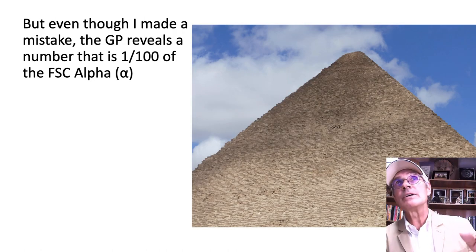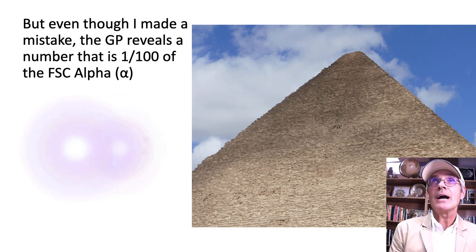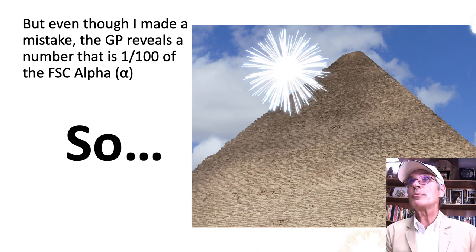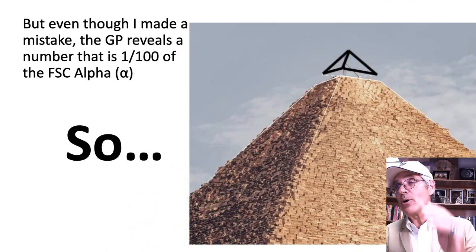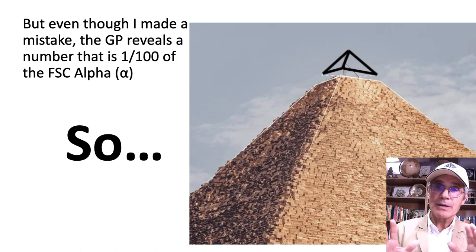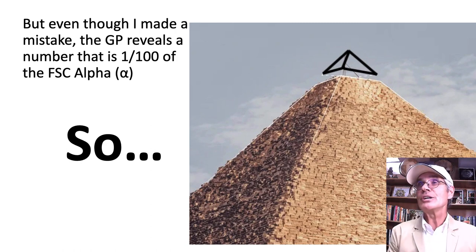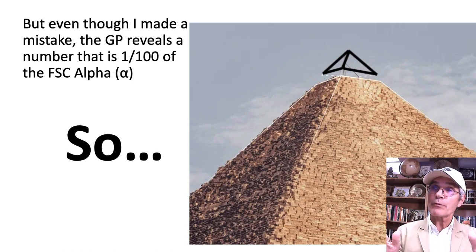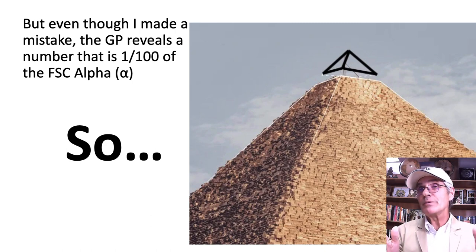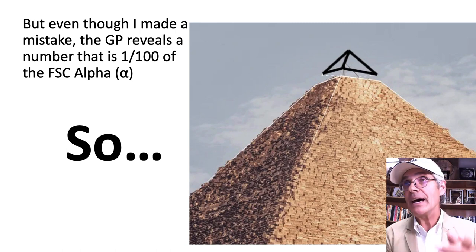Even though I made a mistake, the Great Pyramid reveals a number that is 1/100th of the fine structure constant. So it's not inappropriate to think about having a pyramid that's 100 times smaller — but I want to put out that disclaimer from my last video. That's not a perfect illustration, because it too still suffers the same problem. So that's something for further research: what does it really mean that the fine structure constant is revealed at 100 times its value in the Great Pyramid?